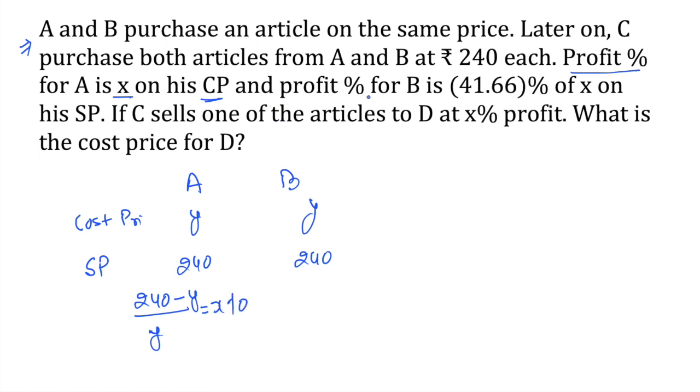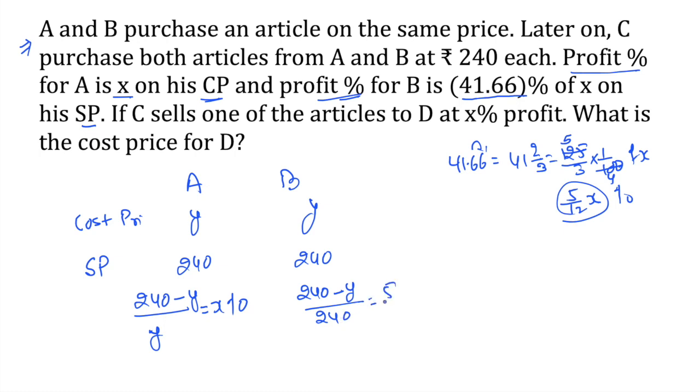And profit percent for B is 41.66%. 41.66 means nothing but 41 and 2 by 3. If you have any digit repetition, this is 125 by 3 percent is a percentage of x. So 5 by 25, 4 by 25, 5 by 12 of x. This one is the profit percentage. But he calculated on selling price. So we can say selling price minus cost price is the profit. We need to calculate it on selling price, which is 5 by 12 x.